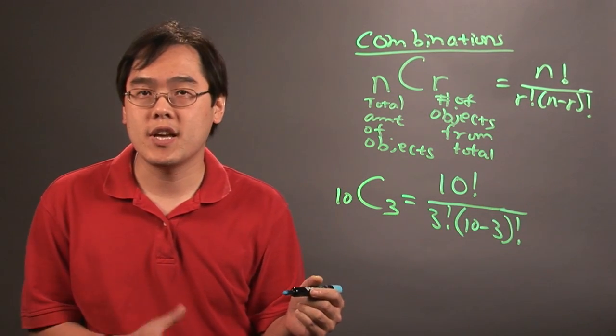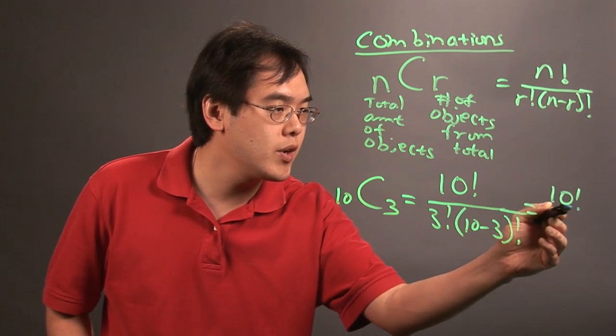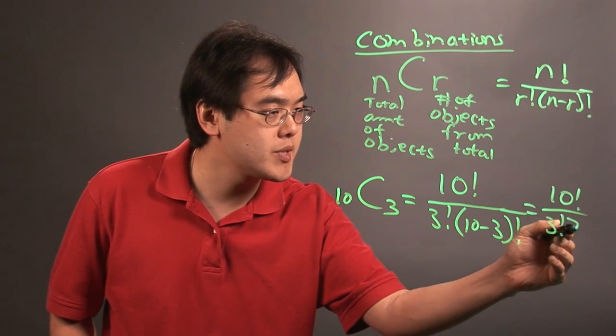So again, you have to think about what's in the parentheses first. 10 minus 3 is 7, so it's going to be 10 factorial over 3 factorial times 7 factorial.